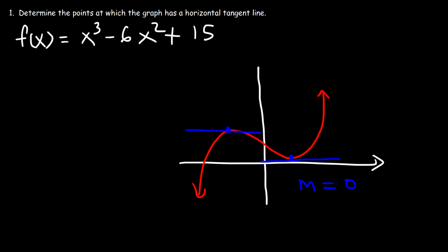The slope of any horizontal line is zero. So to find a point at which the graph has a horizontal tangent line, we need to find the first derivative and set it equal to zero — that's when the slope of the curve will be zero — and then solve for x.